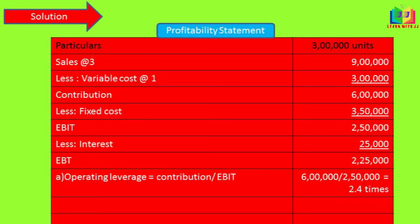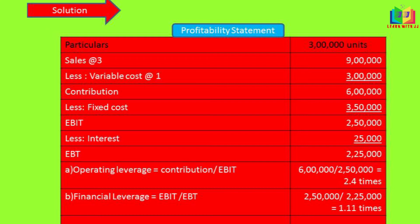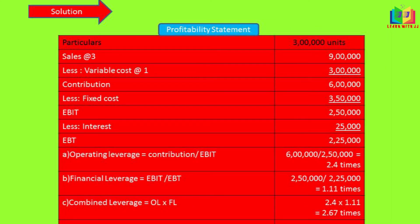Now we find the operating leverage. The operating leverage formula is contribution divided by EBIT, and applying that we get 2.4 times. The financial leverage formula is EBIT divided by EBT, giving us 1.11 times. Combined leverage is nothing but operating leverage into financial leverage, so we get 2.67 times.